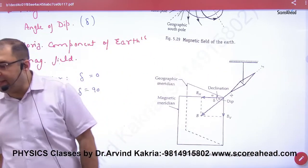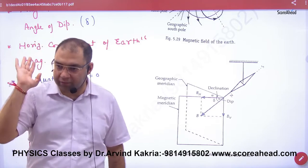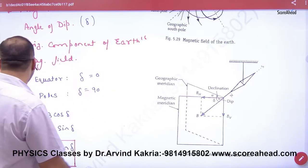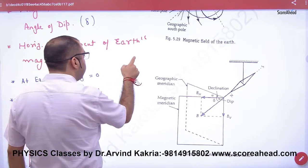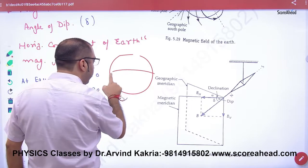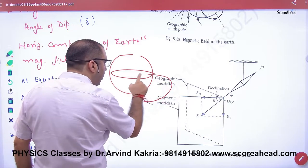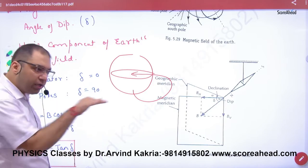At the equator, the angle of dip is always zero. Why is it zero? This is the equator. The line from here enters the equator straight, horizontally entering the equator.